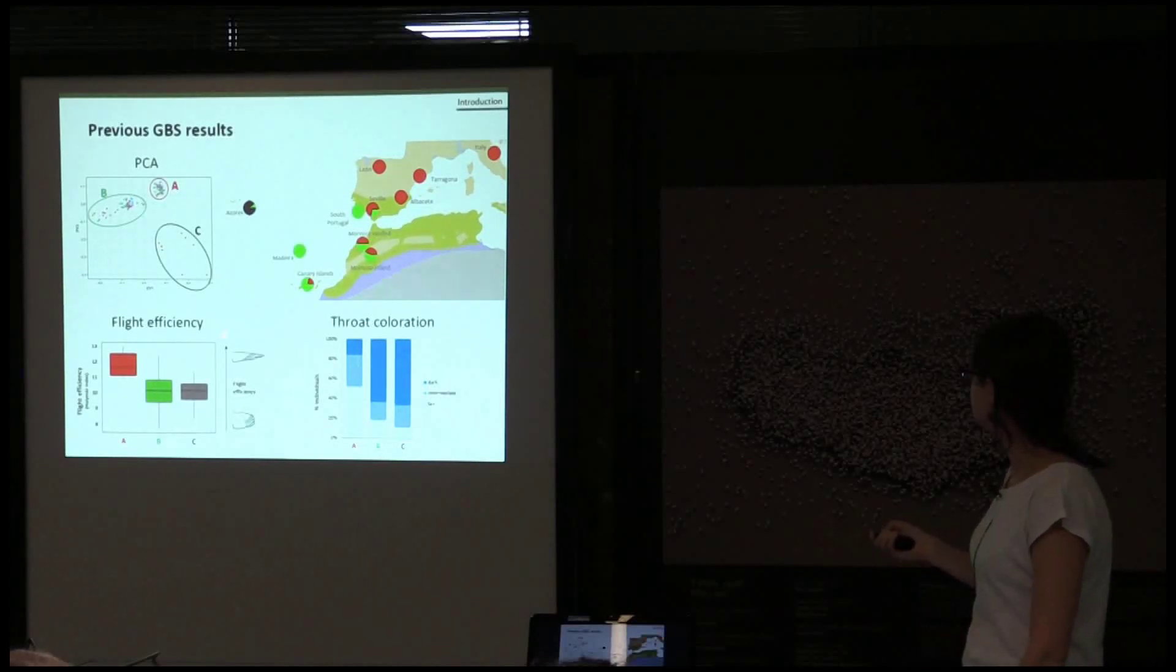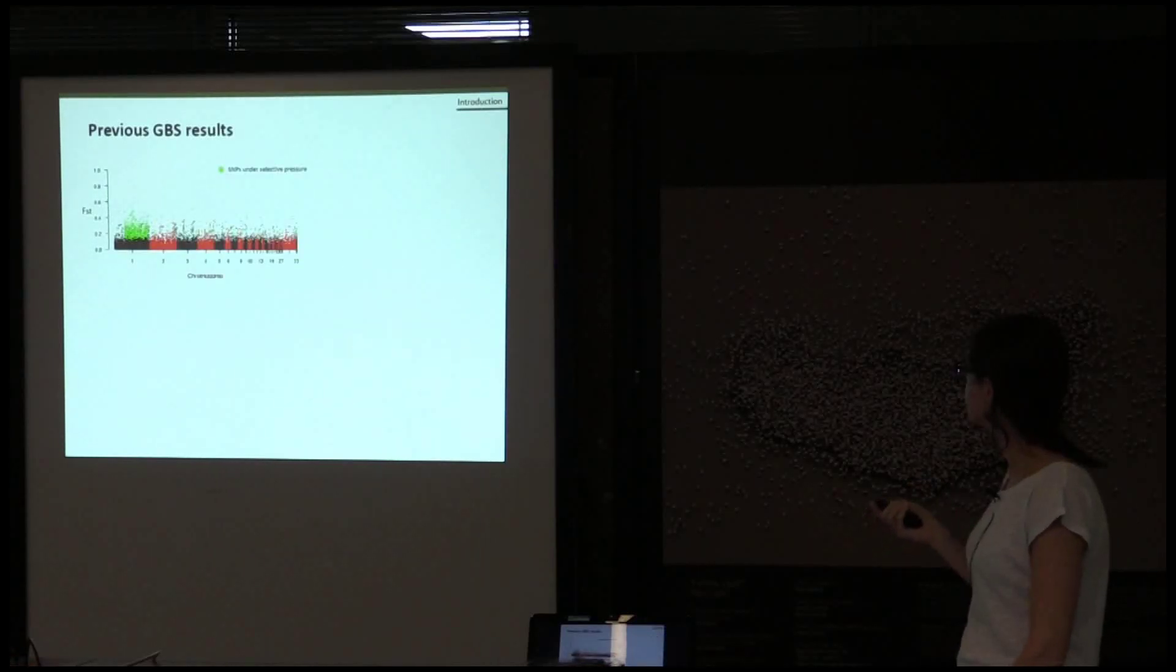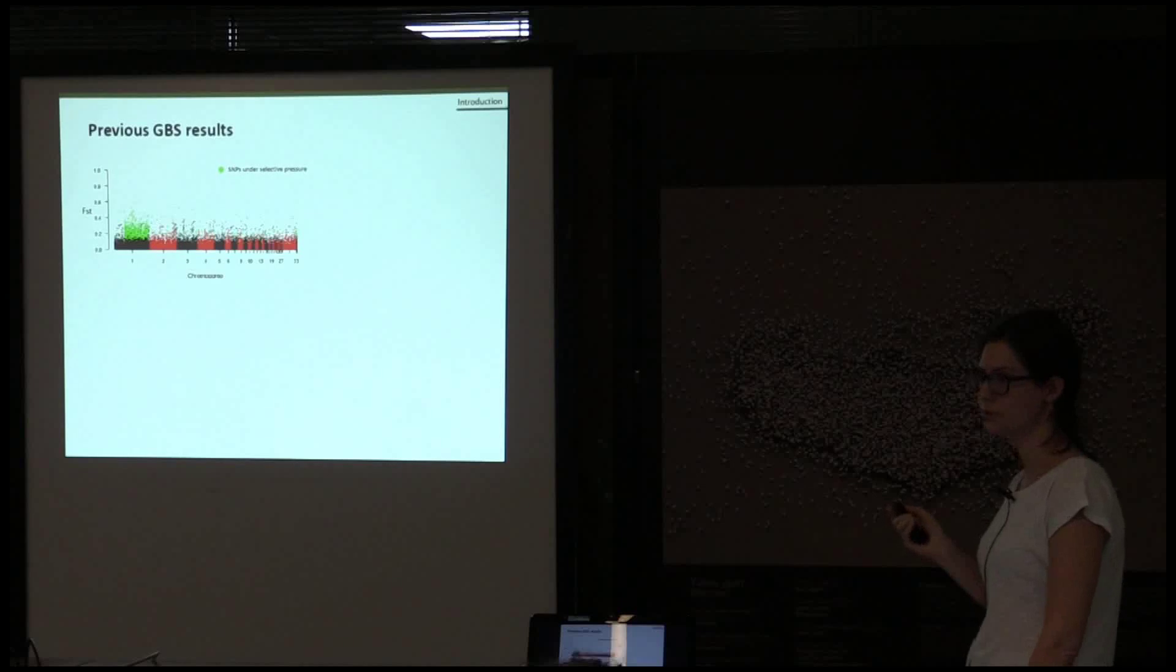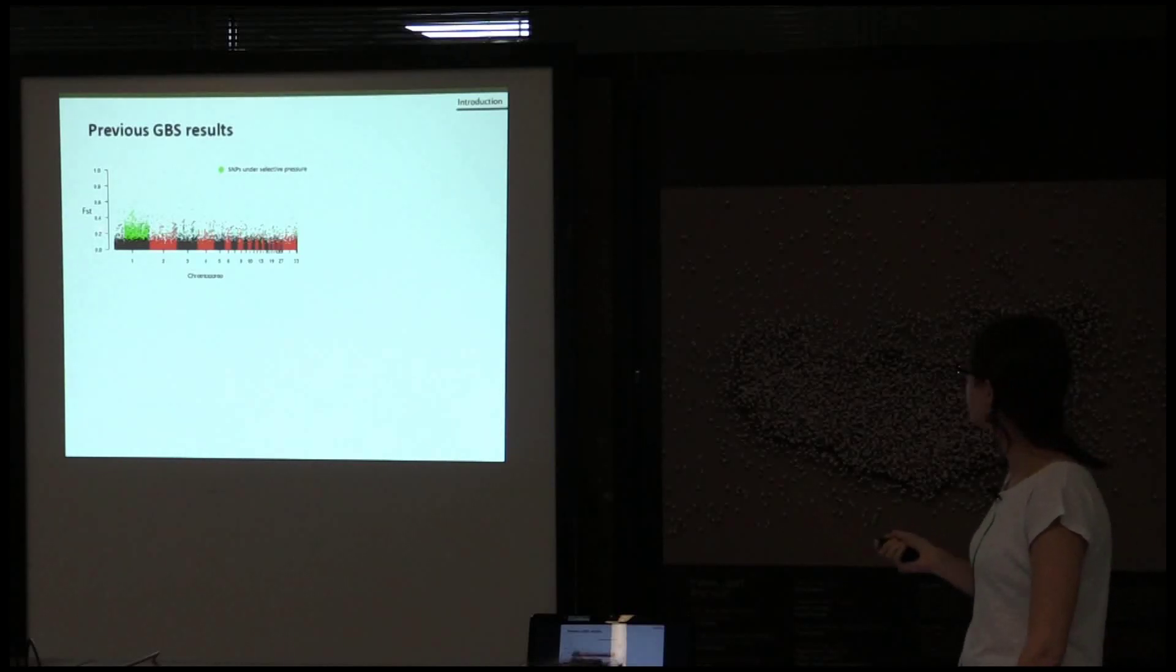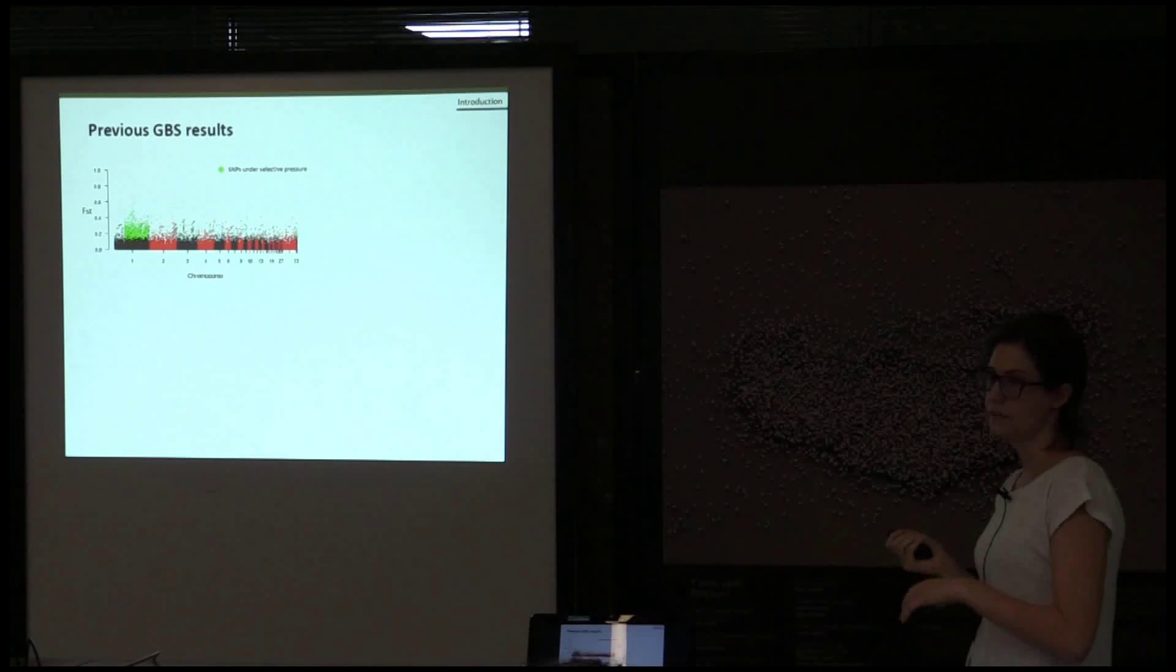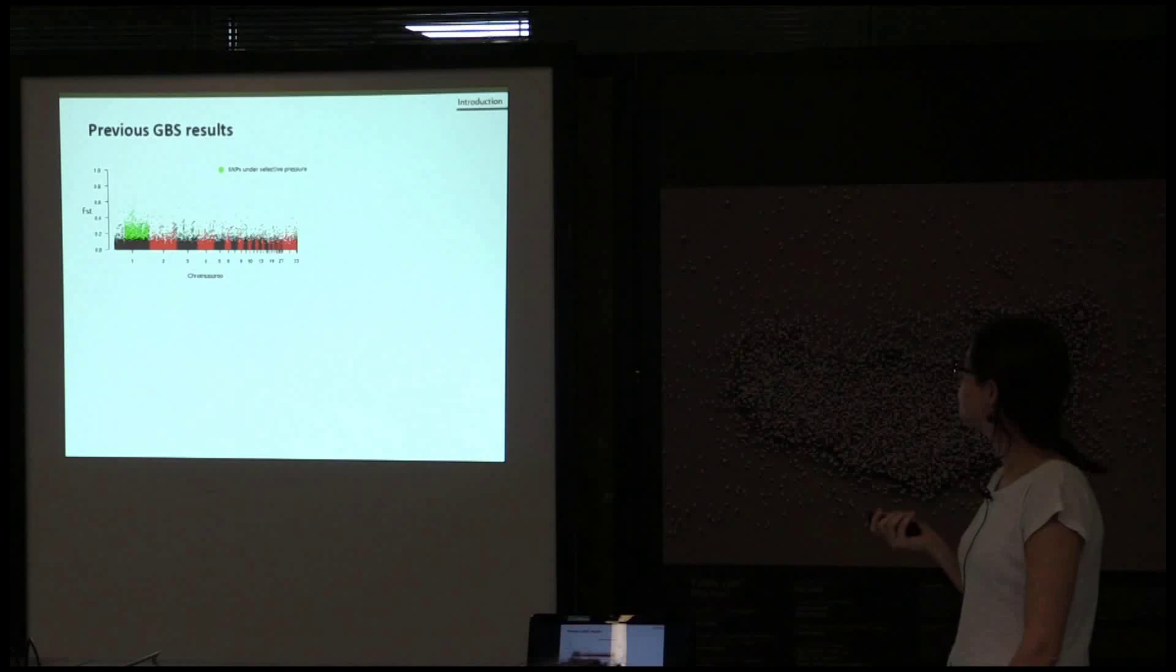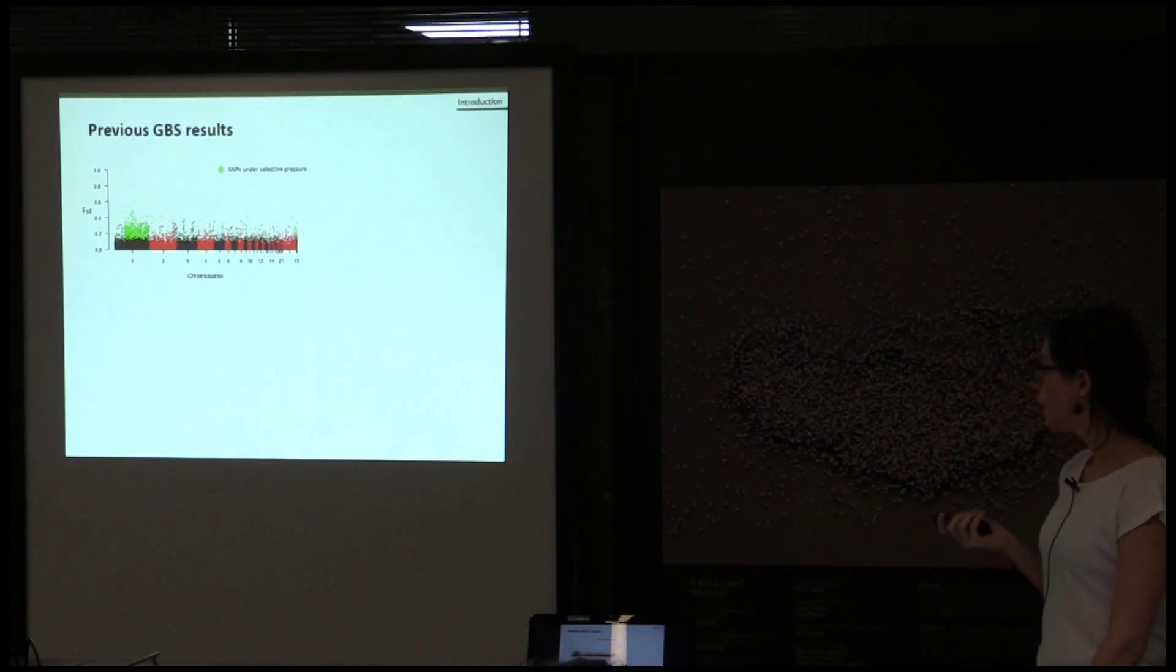As cluster C is exclusive to Azores, in the following analysis, we didn't consider this. We just compared these two. In this Manhattan plot, where you can see along this axis the genetic differentiation and along this one the different chromosomes, you can see that there is a large region in chromosome 1 with a high number of SNPs that are outliers, and they are likely to be under selective pressure.